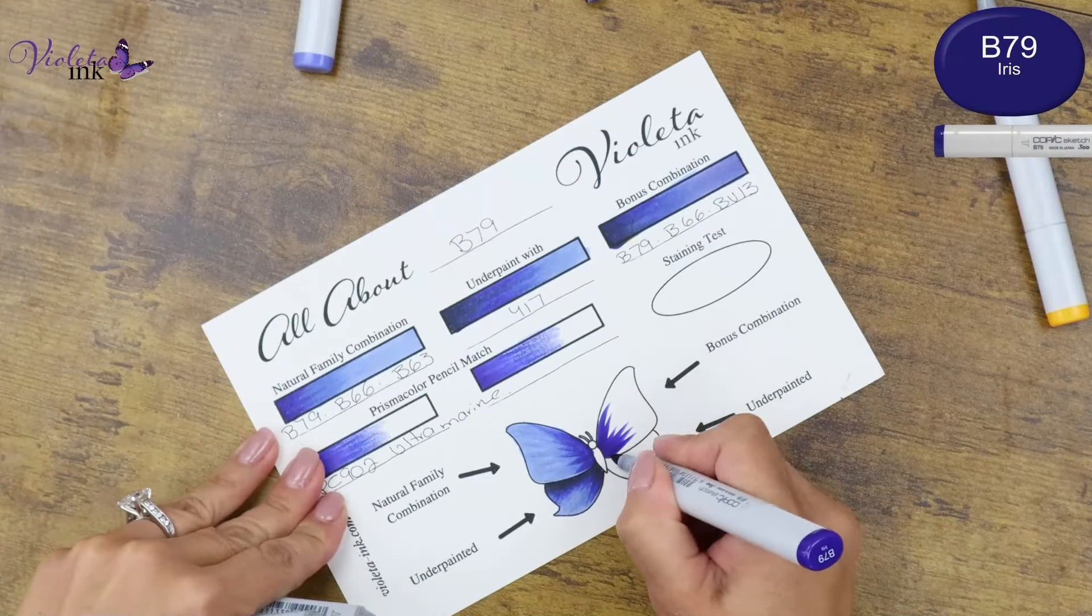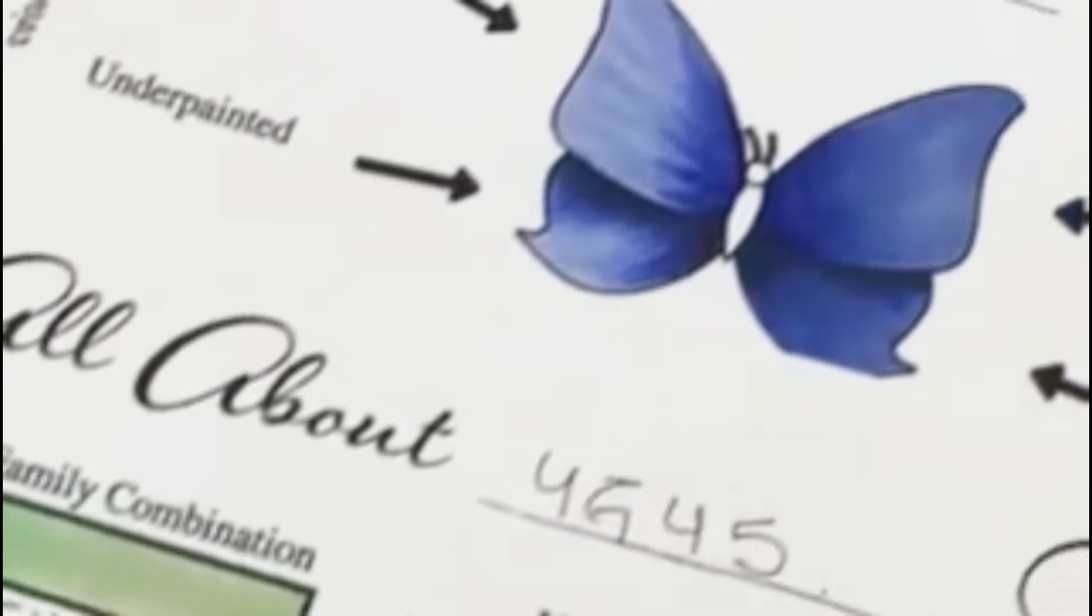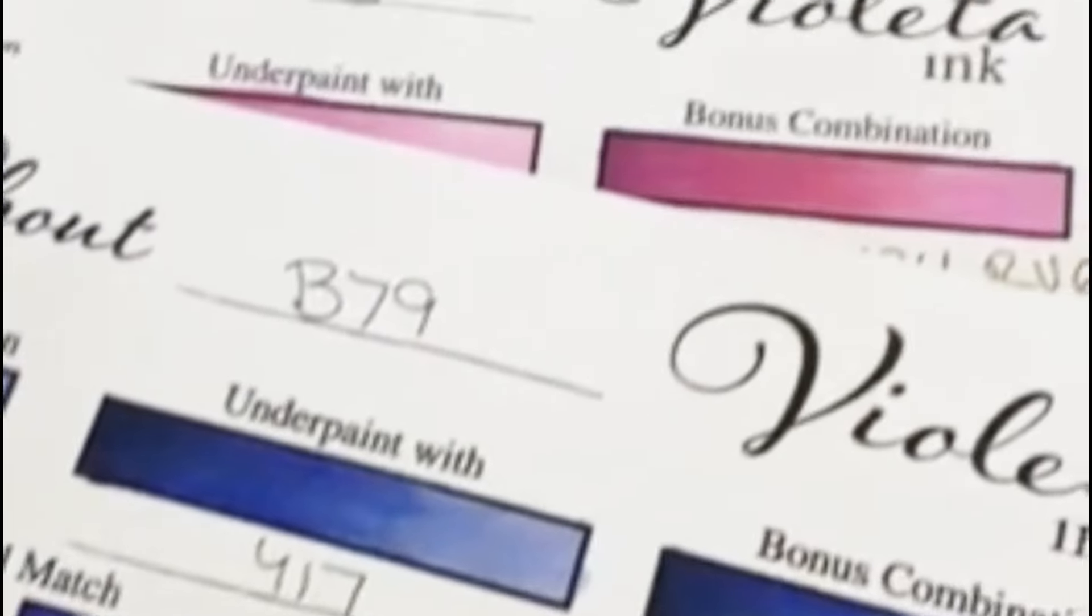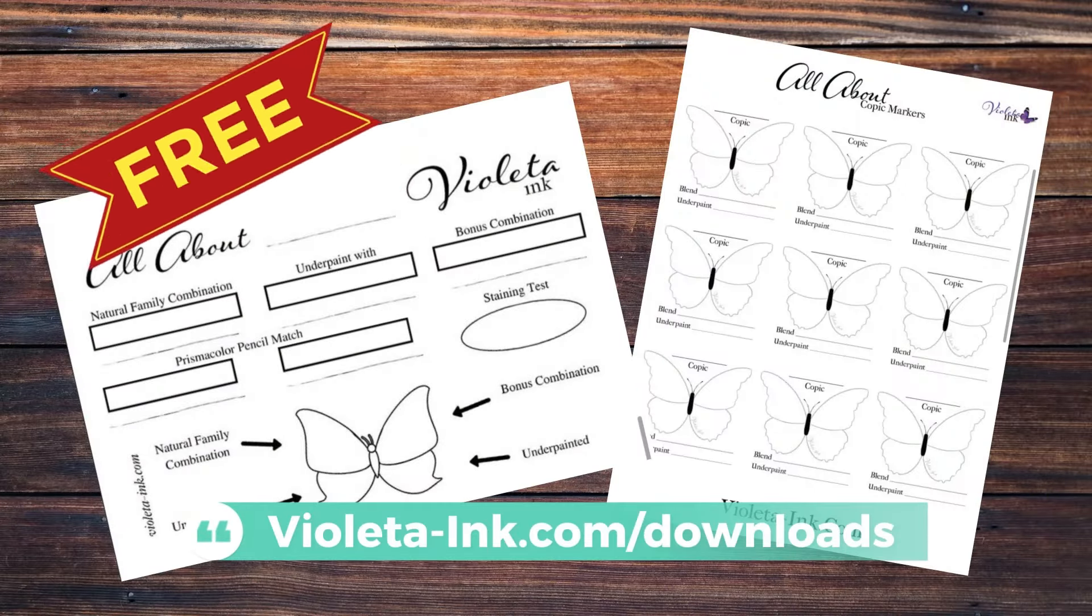Do you love watching swatch Copic markers? Do you want to make your own swatches? Head on over to violettainc.com backslash downloads, where you can download two different butterfly swatch papers. Check it out.